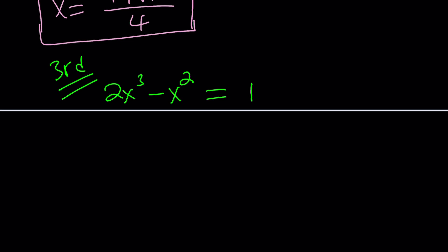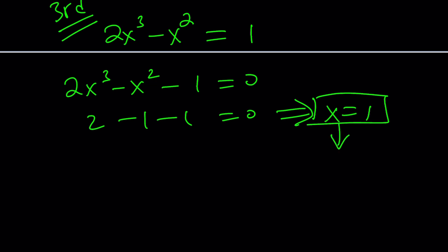if you put everything on the same side and look at the coefficients, 2 minus 1 minus 1 equals 0. You know what that indicates? The sum of the coefficients is 0. That means x equals 1 is a solution. And guess what that means? That means x minus 1 is a factor, because from factor theorem, if x equals 1 is a solution, then x minus 1 is a factor.